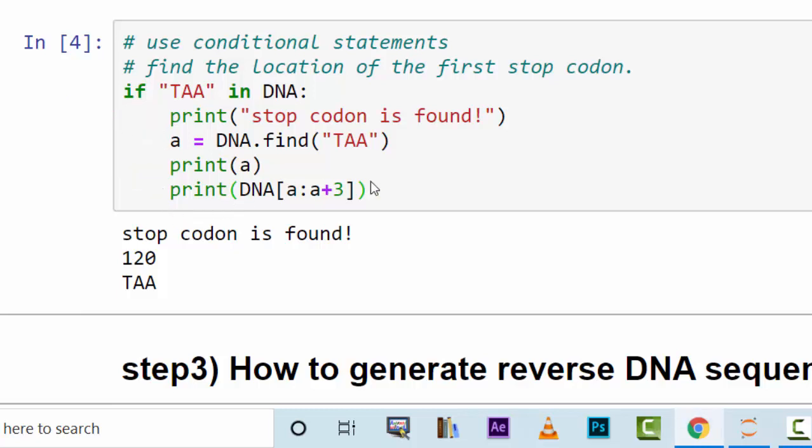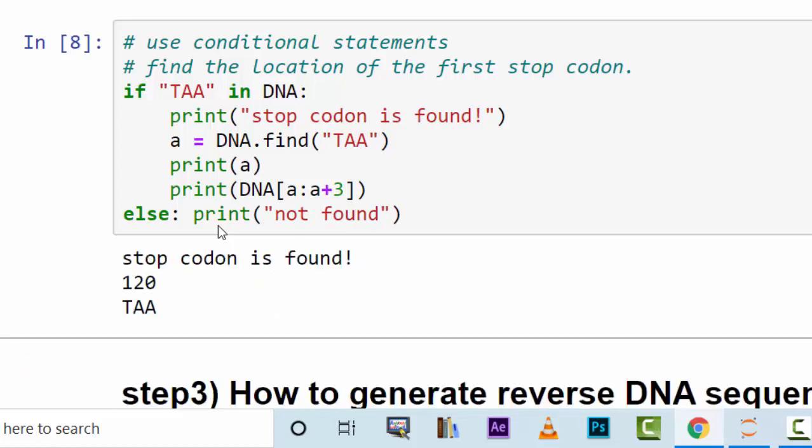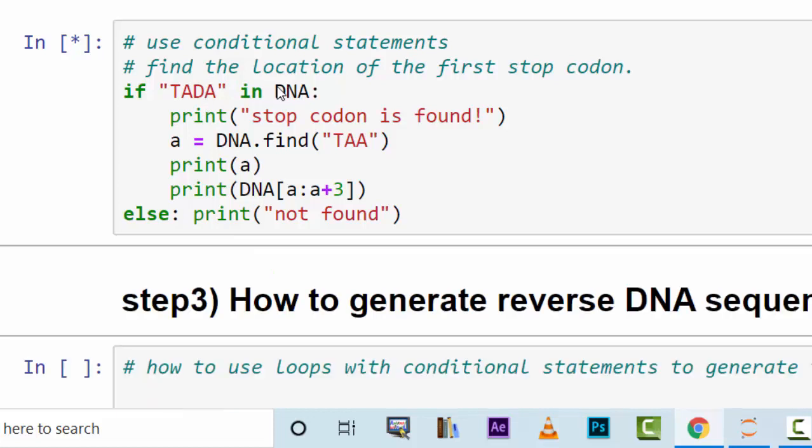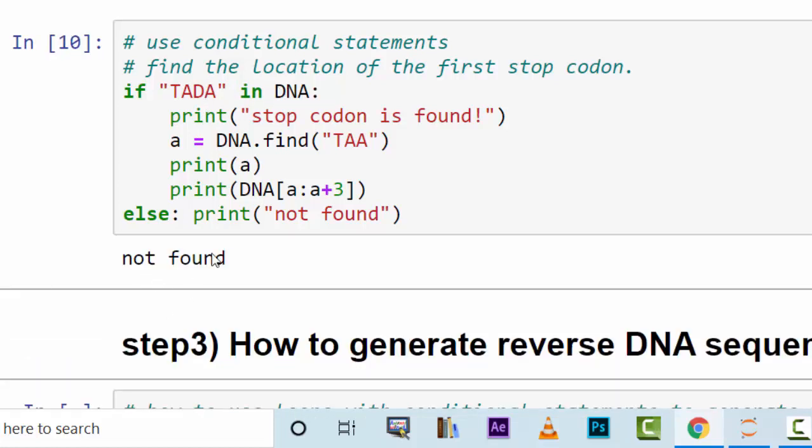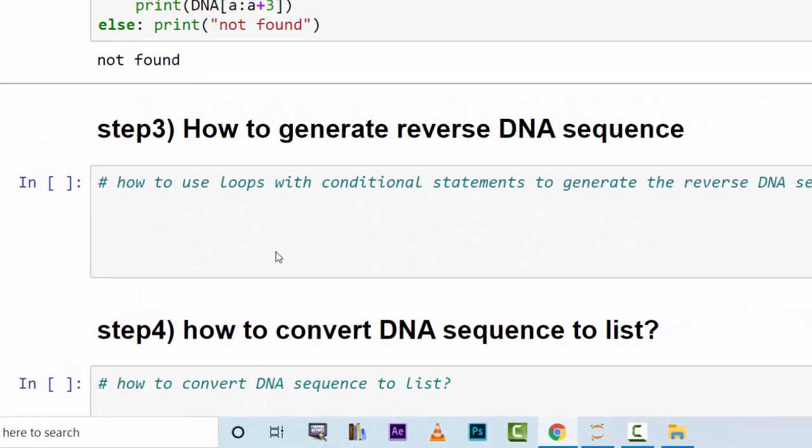If not, how do you write if not? You write down else, print not found. Since it's found, the condition is already met, the result of the else statement is not shown. However, if you write D in it, it will show you not found because the DNA sequence does not contain D. So this is the basics of using if statements for biological purposes or bioinformatics purposes.